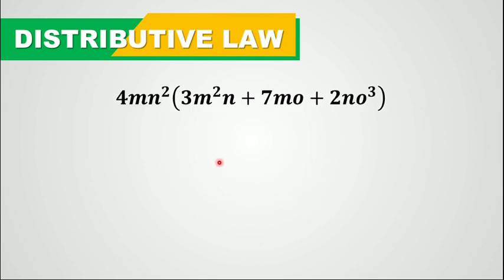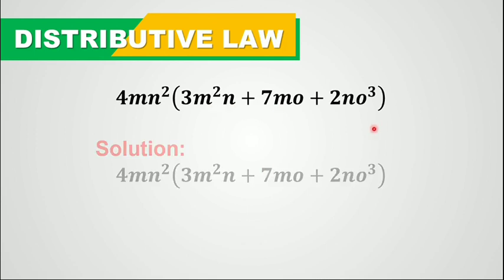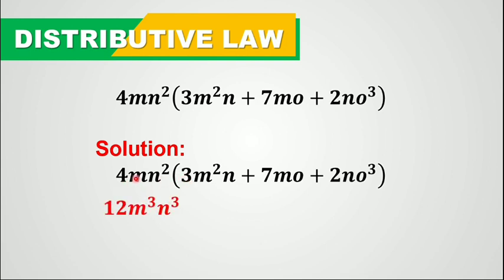So 4mn squared times the quantity of 3m squared n plus 7mo plus 2no cubed. Again, distribute by multiplying this term to each of these terms. So 4mn squared times 3m squared n: 4 times 3 is 12, m times m squared is m cubed, and n squared times n is n cubed.